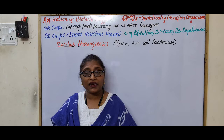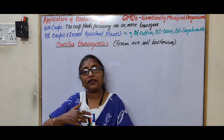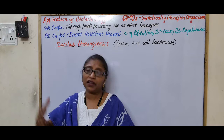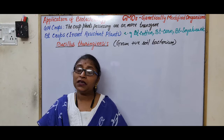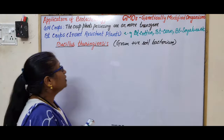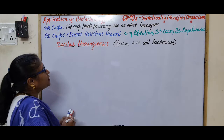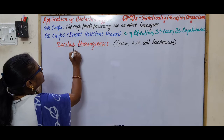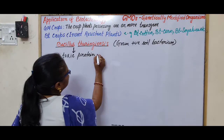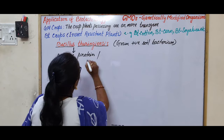Biomagnification increases from producer tissue to first-level, second-level consumers and goes on increasing. To reduce this, scientists started developing pesticide-resistant plants, thereby reducing the use of pesticides and insecticides. These are insect-resistant plants. Bacillus thuringiensis produces a toxic protein.